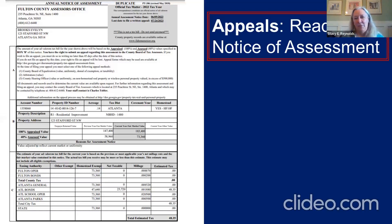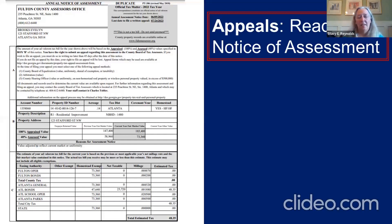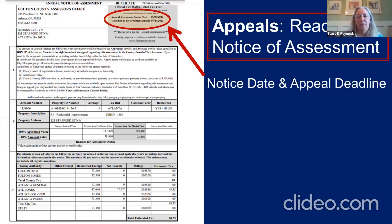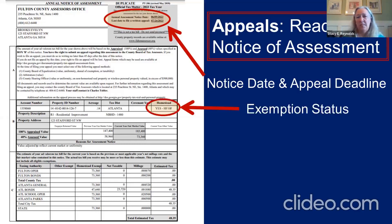I think there are a lot of people who didn't realize what this was. Our former executive director sent me an email saying he thought it was spam — it turned out it was his notice of assessment sent electronically. So if you talk to anybody who didn't get it by mail, that may be the reason. Whether you got it by mail or not, the deadline is July 24th. The notice of assessment has the notice date and the deadline.